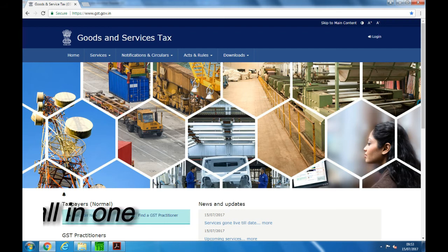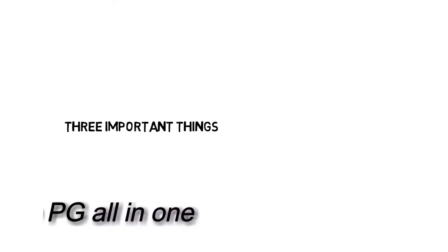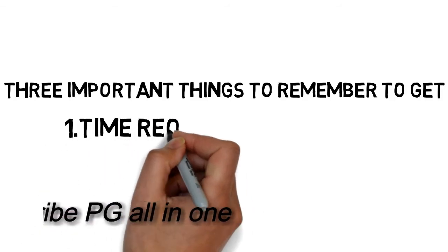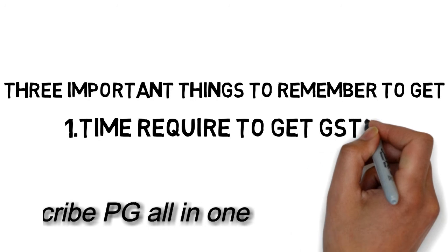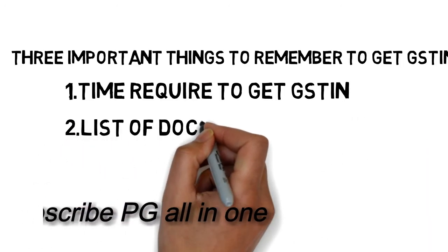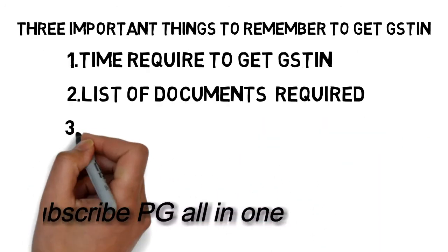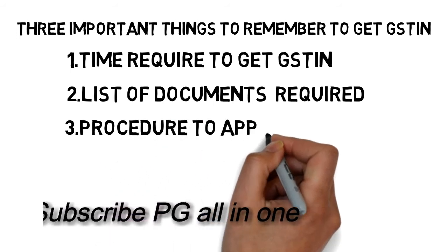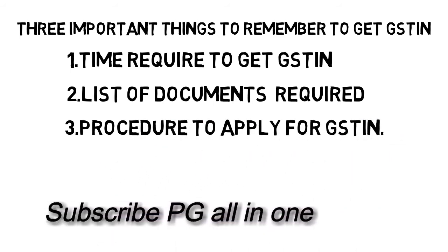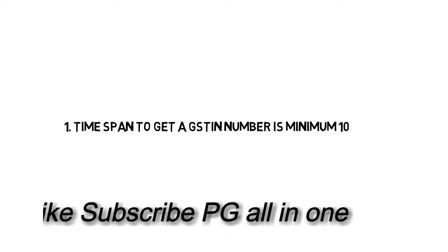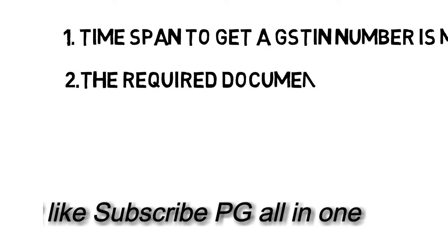There are three important things to remember for the GST registration process. First is the time required to get your GSTIN number. Second is the documents required. And the last one is the procedure to apply for GSTIN. The time required to get a GSTIN number is minimum 10 days.